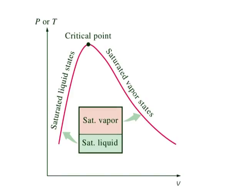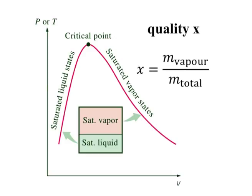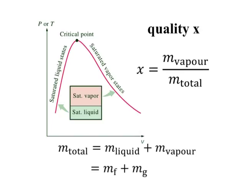Saturated liquid vapour mixture. During a vaporisation process, a substance exists as part liquid and part vapour — that is, it is a mixture of saturated liquid and saturated vapour. To analyse this mixture properly, we need to know the proportions of the liquid and vapour phases in the mixture. This is done by defining a new property called the quality X, as the ratio of mass of vapour to the total mass of the mixture: X is equal to M vapour divided by M total, where M total is equal to M liquid plus M vapour, which is equal to MF plus MG.